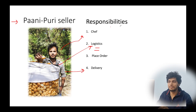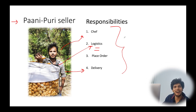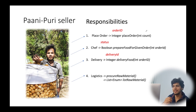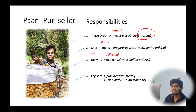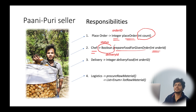If you think of these responsibilities in terms of code, a naive developer will create an order placement helper method that asks for the number of plates requested by the customer and returns an integer representing the order ID. The second responsibility is food preparation, so we expose a method called 'prepare food for given order' that accepts an order ID and returns a boolean value signifying whether the order has been prepared or not.